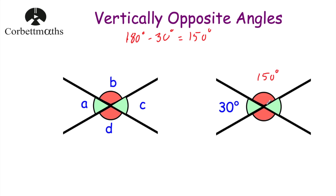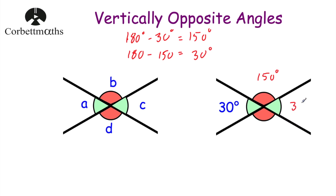Now we want to find the size of this green angle. Here's another straight line, so if we take 150 degrees away from 180 degrees we can find the size of this angle. So we do 180 degrees subtract 150 degrees, and that's equal to 30 degrees. So this angle would be 30 degrees, and that's fantastic because that's equal to the angle opposite it.